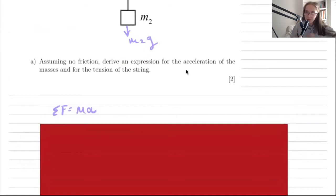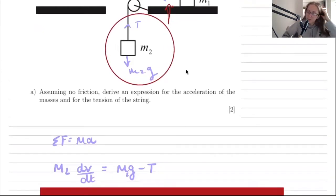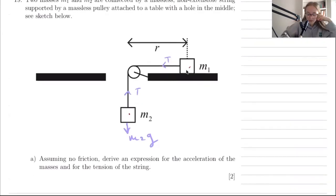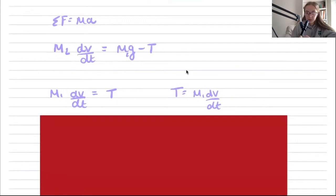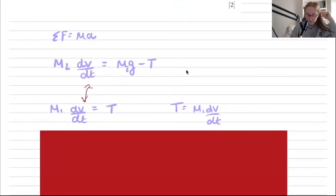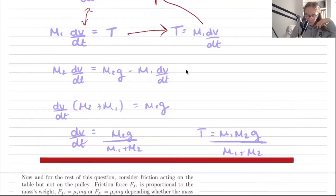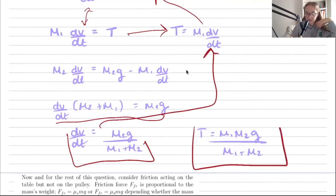Applying Newton's second law to mass m₂: m₂·a equals the weight force minus tension. Since the string is inextensible, both masses share the same acceleration. For mass m₁: m₁·a equals tension. Rearranging for tension and substituting back yields an expression for acceleration, which can then be used to find tension.